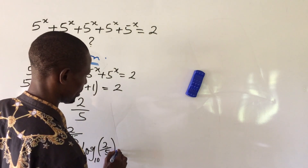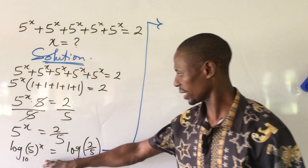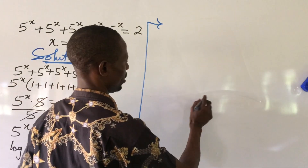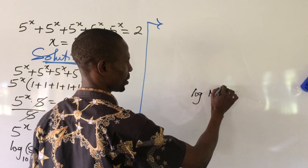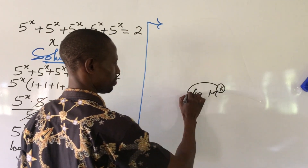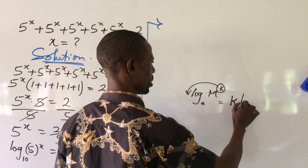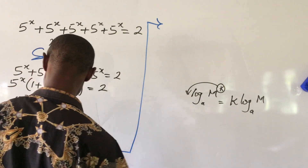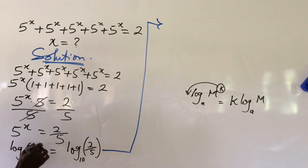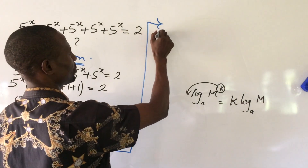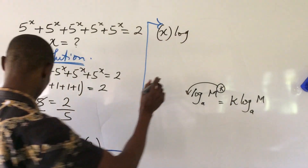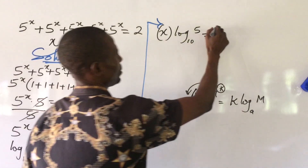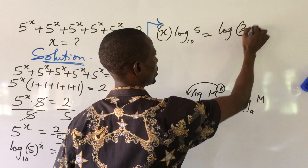Now we apply the power law of logarithms, which says that if you have log m to the power of k, base a, you move this power forward. So that gives us k times log m, base a. Applying this to the left-hand side, moving x forward, we get x times log of 5, base 10, equal to log of 2 over 5, base 10.